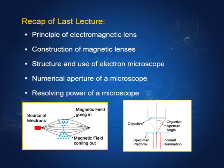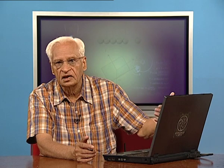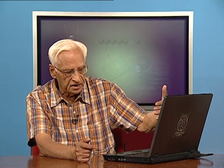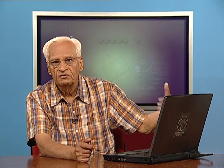The resolving power of a microscope depends on what is known as numerical aperture. That means this angle alpha — the cone that waves subtend on the lens, half of that — this angle alpha is called the numerical aperture. So with the help of numerical aperture, we were able to define the resolving power of a microscope.